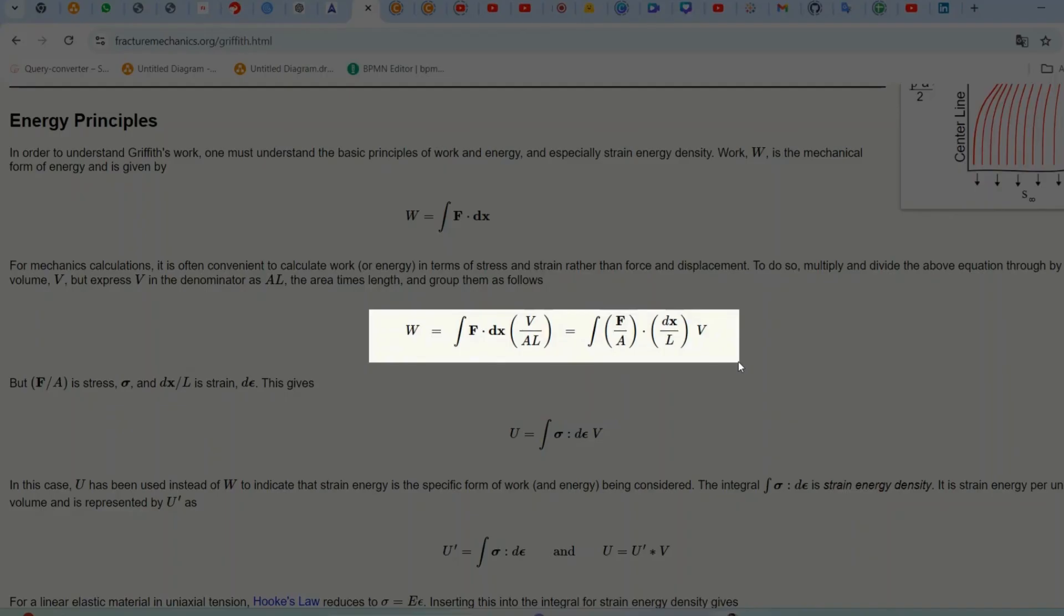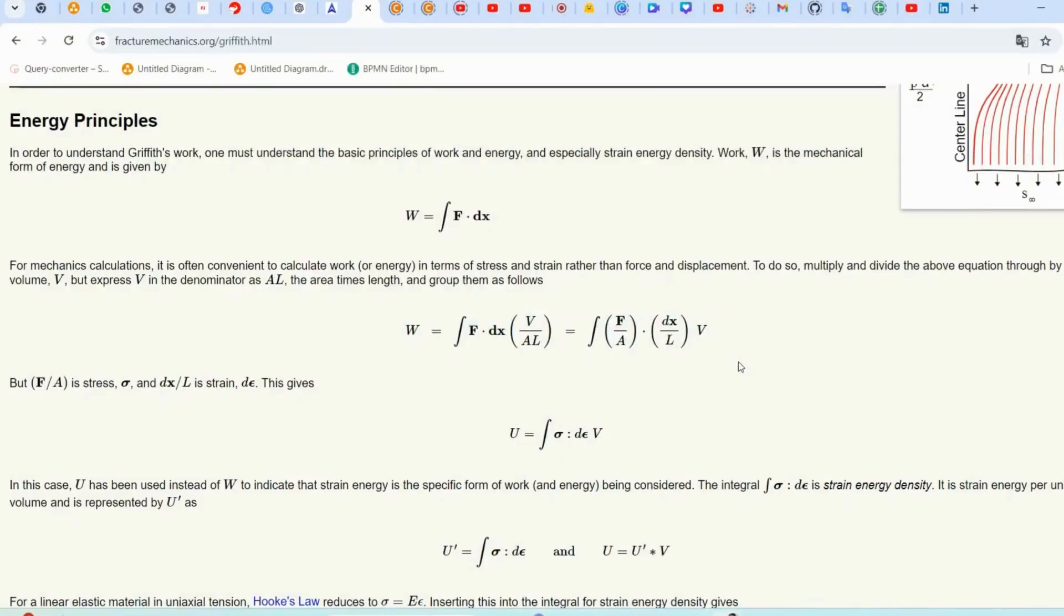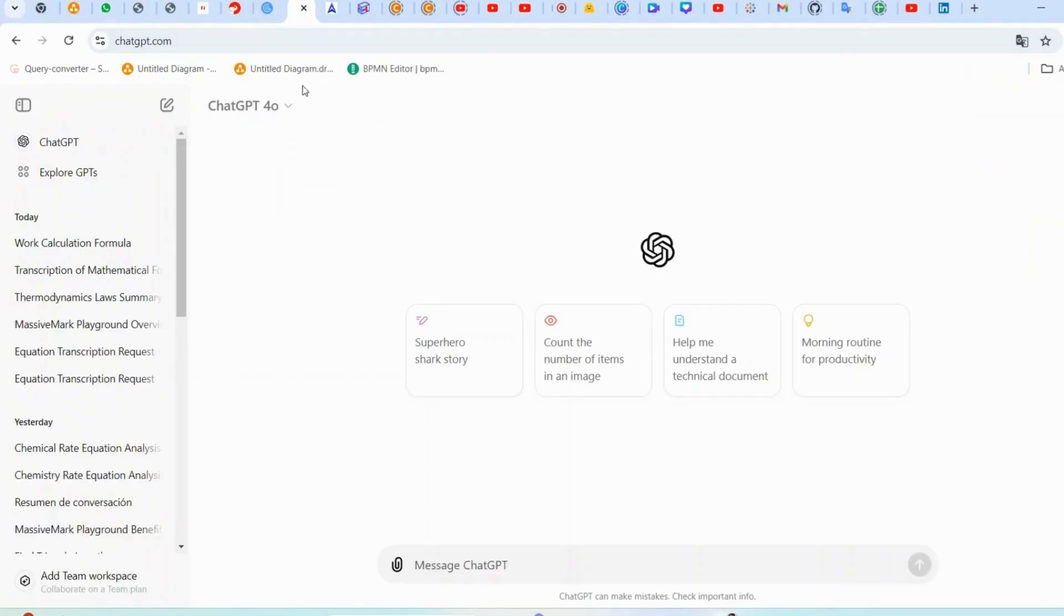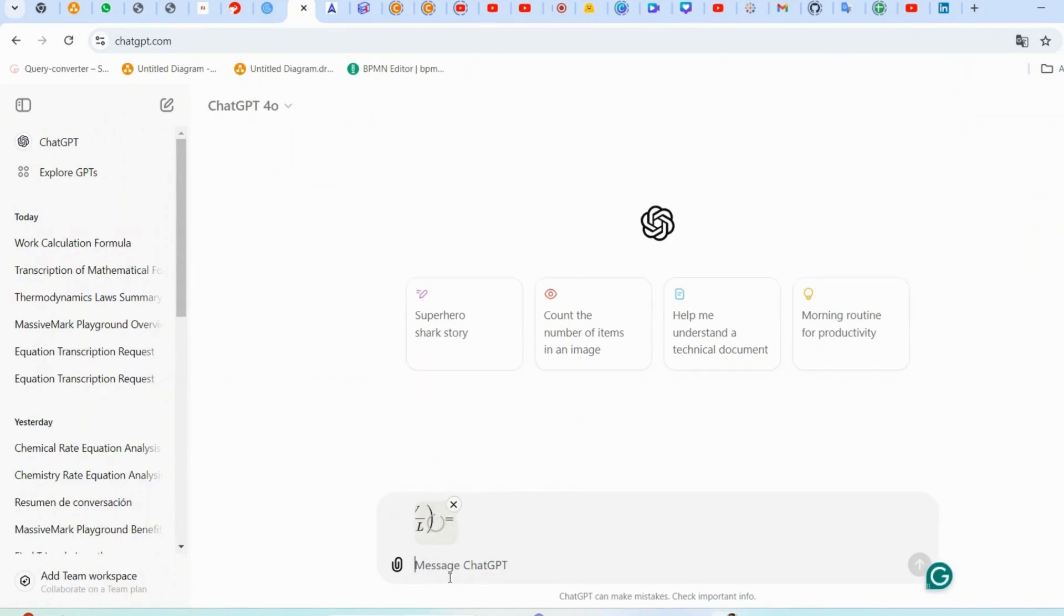After selecting the area, your tool will automatically capture the image. Save the snip to a convenient location on your computer by clicking Save or using the Copy option if you are going to paste it immediately into the AI tool. Now, head over to ChatGPT 4.0 or Gemini and use their OCR functionality. You can upload the image of the equation you just snipped and the AI will transcribe it for you.